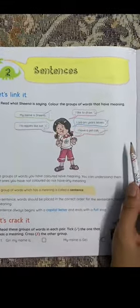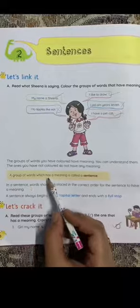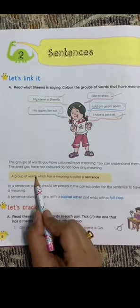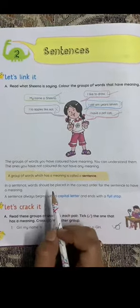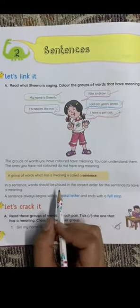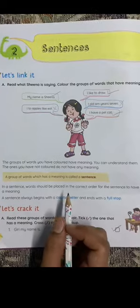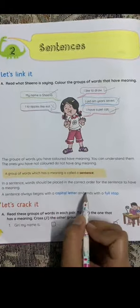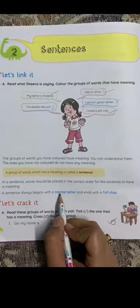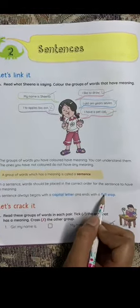So what is the meaning of sentence? A group of words which has a meaning is called a sentence. That means a meaningful line and group of words is called a sentence. A sentence always begins with the capital letter and ends with the full stop.